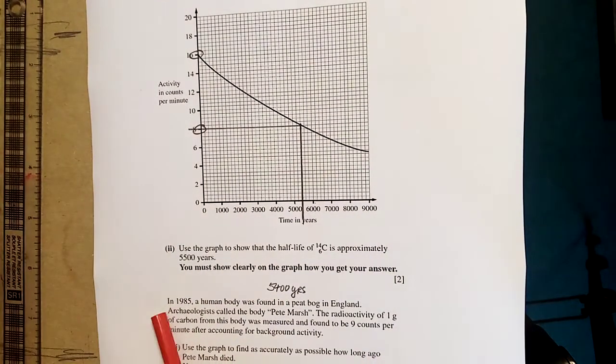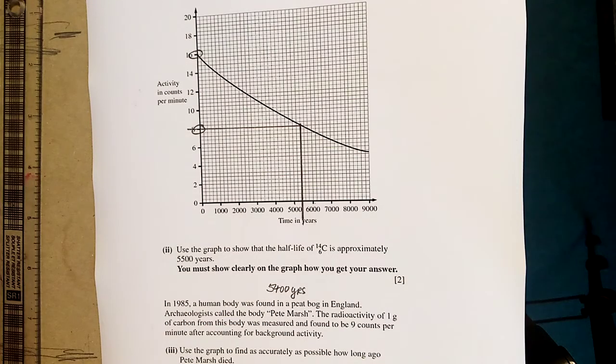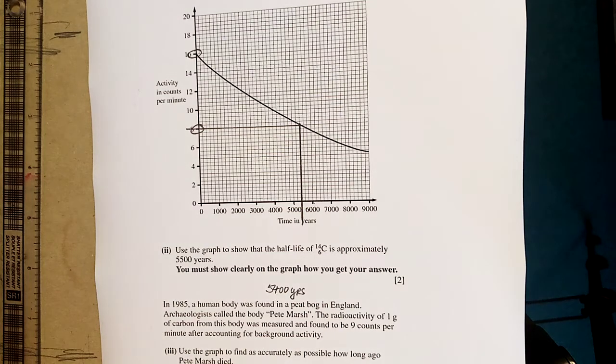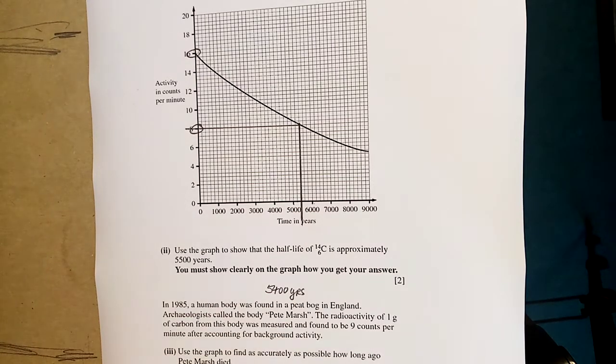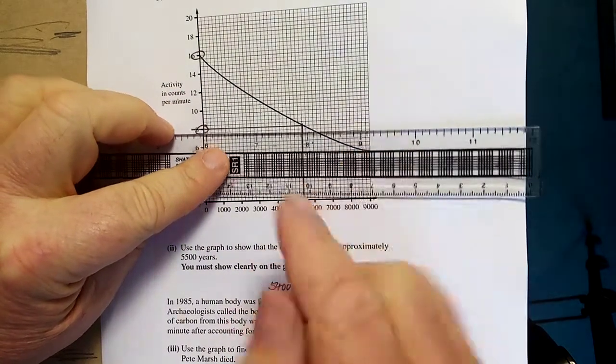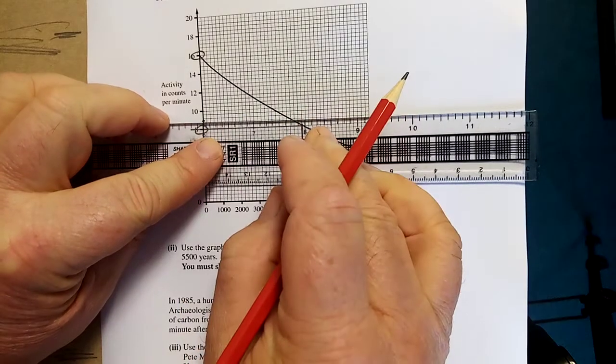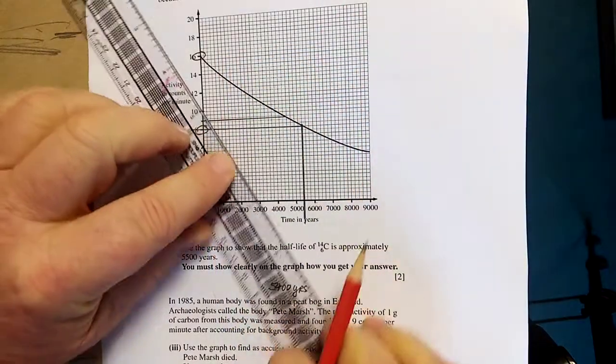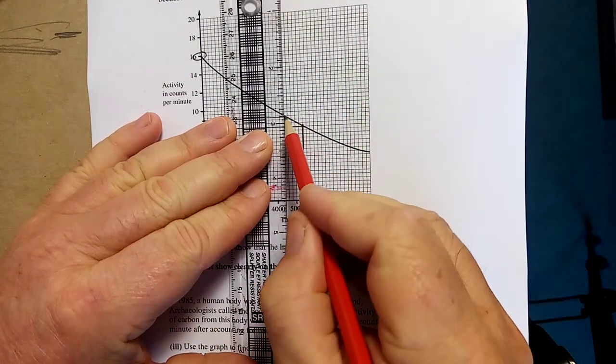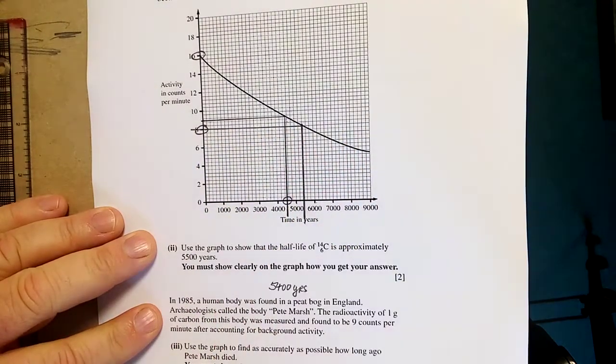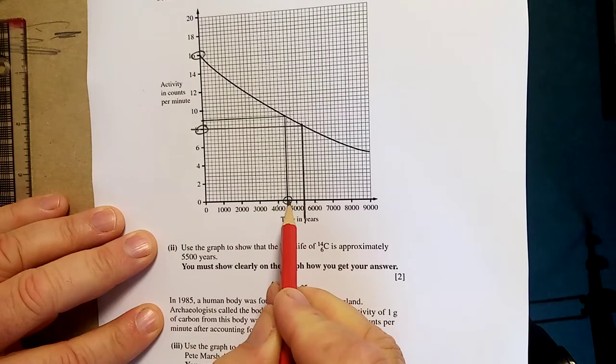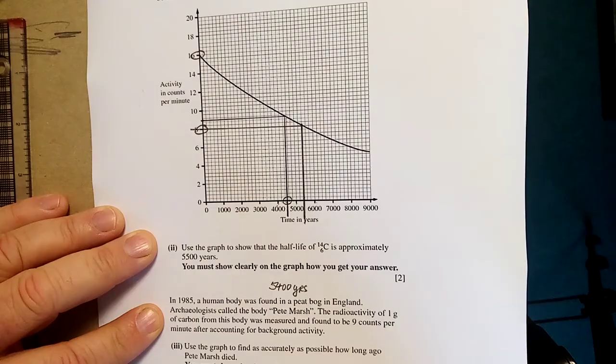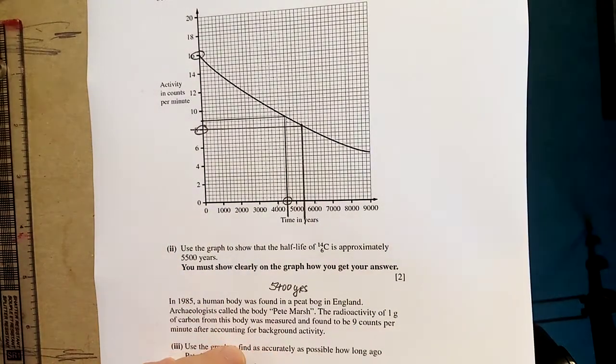I can do no more. In 1985, a human body was found in the peat bogs of England. Archaeologists called him Peat Marsh. What a great sense of humour those archaeologists had. The radioactivity of 1 gram of carbon from his body was measured to be 9 counts per minute after accounting for background activity. Use the graph to find as accurately as possible when did he die? When's 9? There's 8, there's 10, there's 9. So carefully, accuracy here, put a line across and down. See that, there's the 9. So the construction line, and I got that, and the answer is 4,500 years. Nearly as old as me.